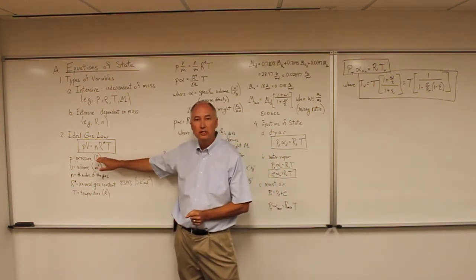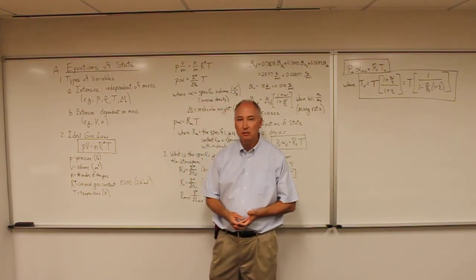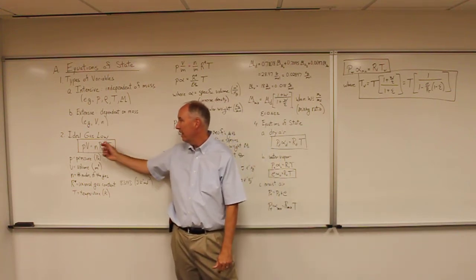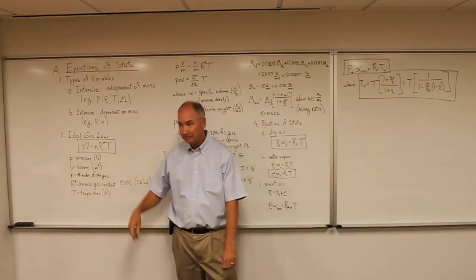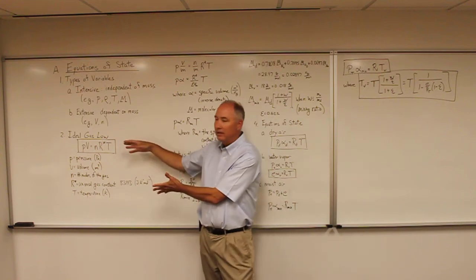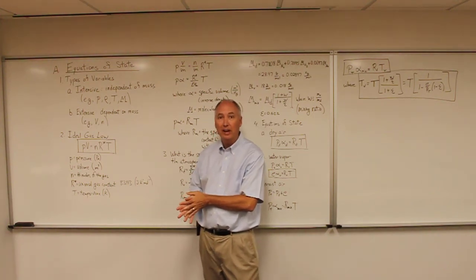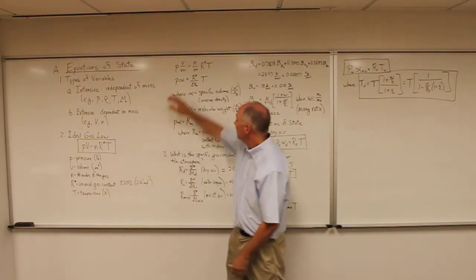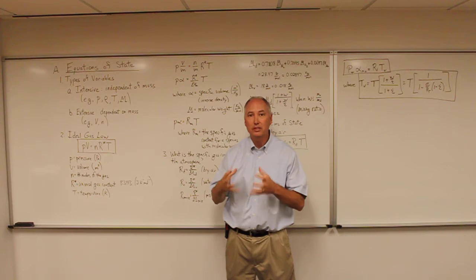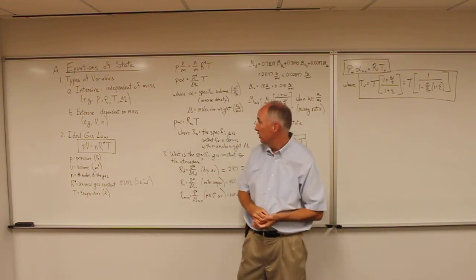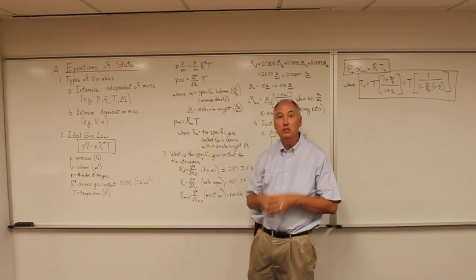As you can tell from this equation, it has two extensive variables and two intensive variables. The intensive variables are pressure and temperature, and the extensive variables are volume and the number of moles. In order to transform this equation to one that is mass-independent, we divide the two extensive variables by mass.